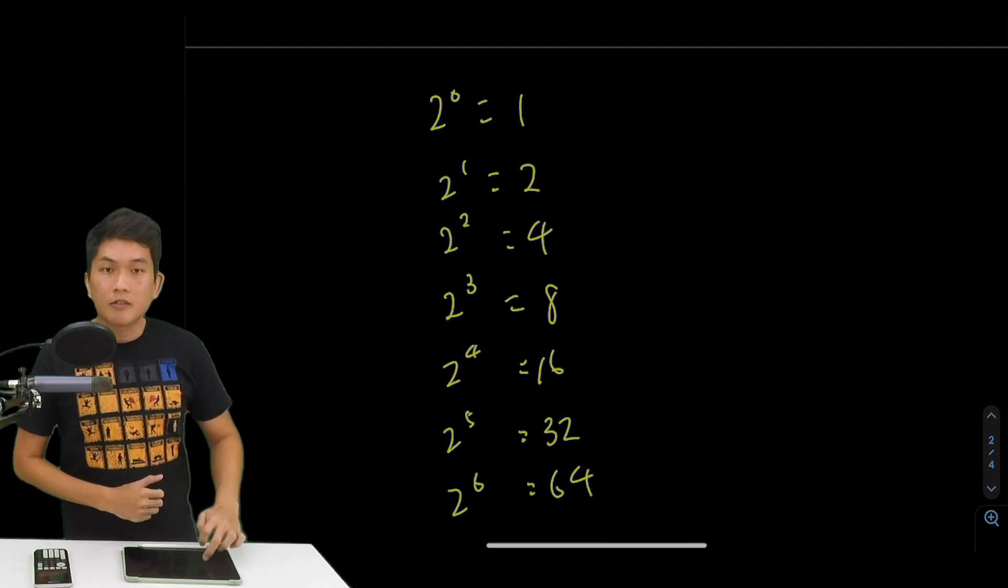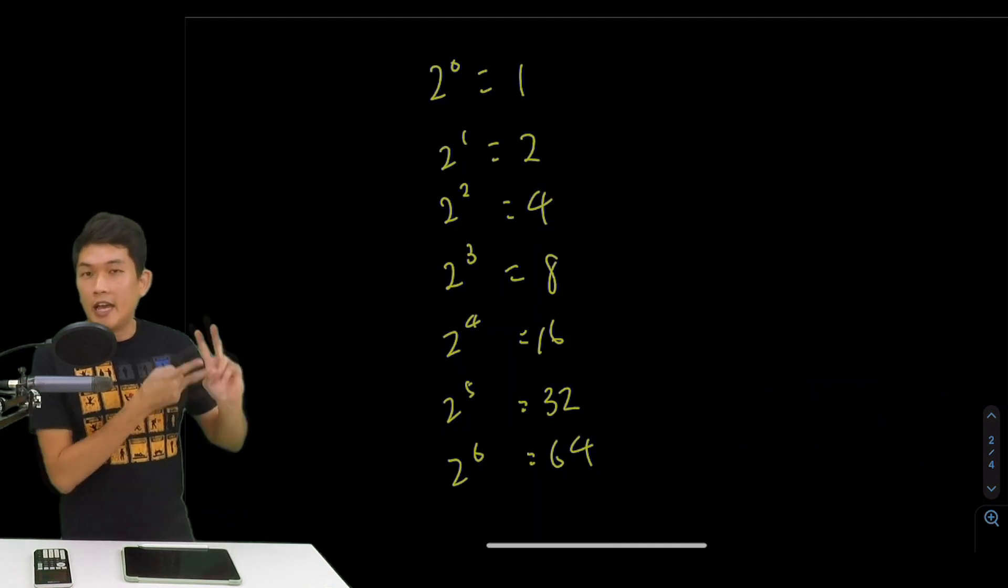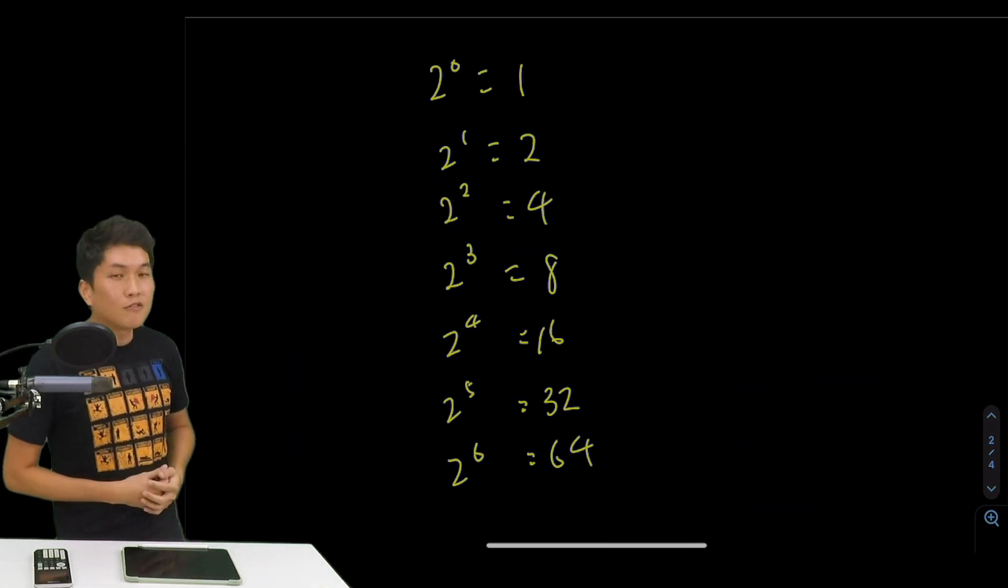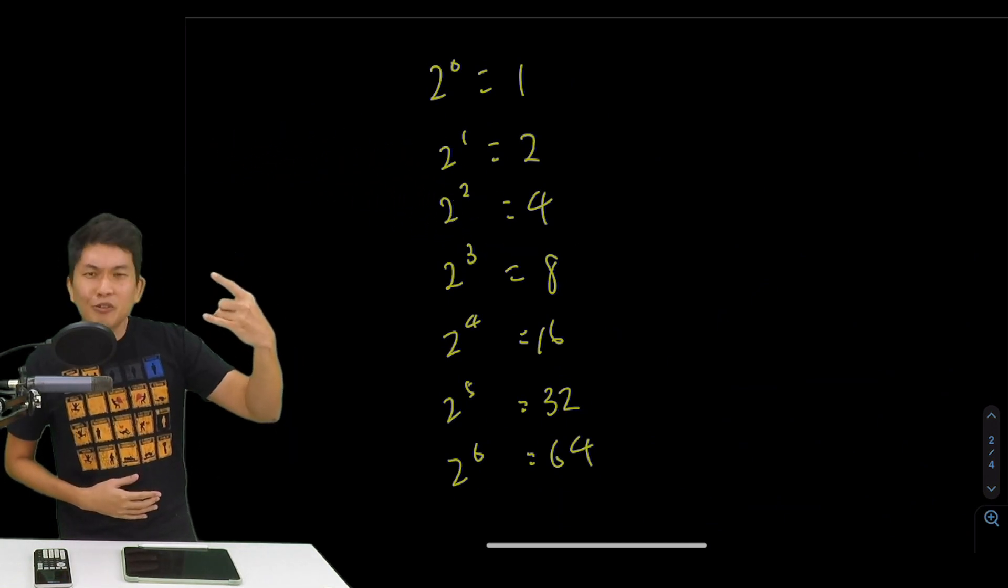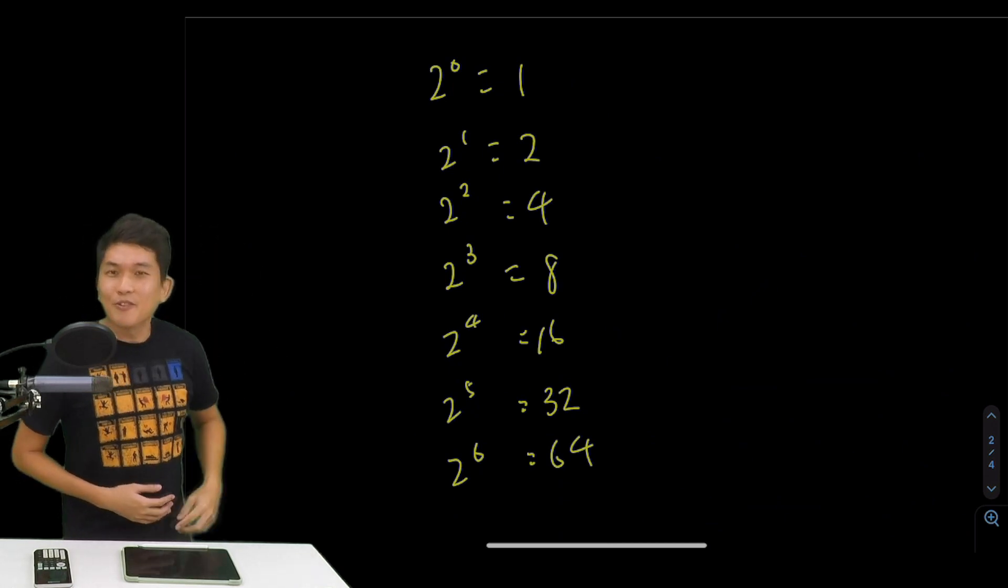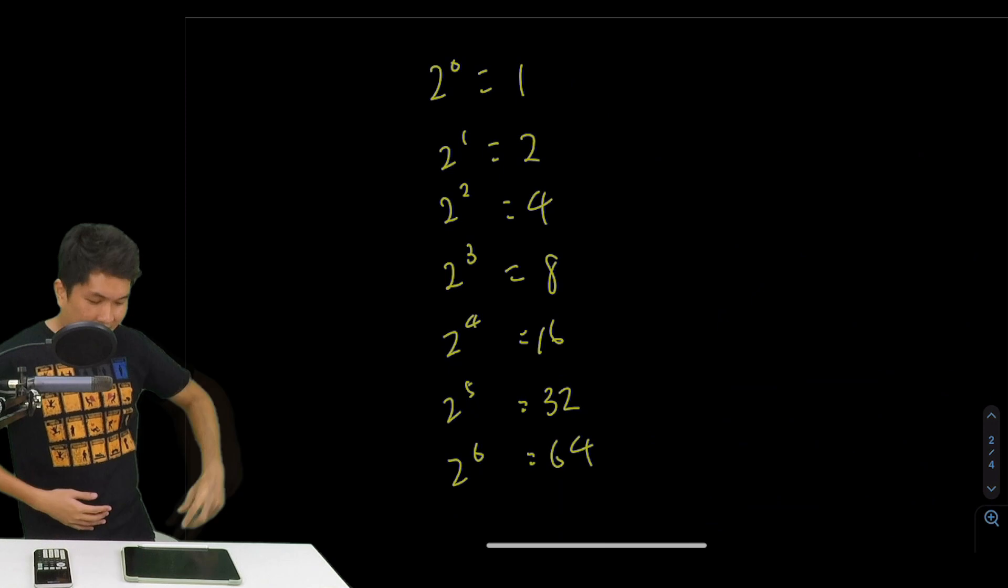So I really, really liked 2 to the power or something. Hashtag binary for life. So if I were to come up with gang signs for binary, I can only use two fingers. So we can't really get very creative with binary for life.